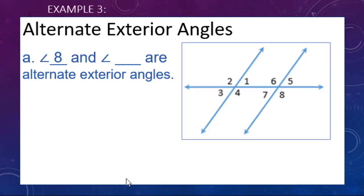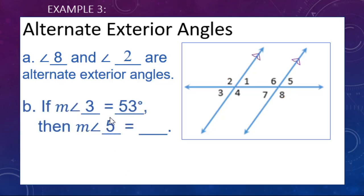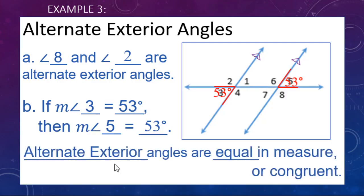Examples: angle eight and angle blank are alternate exterior angles. We ignore the interior angles, and the alternate exterior angle to angle eight is angle two. If the measure of angle three is 53 degrees, angle five is also 53 degrees, because alternate exterior angles are equal in measure — they are congruent.